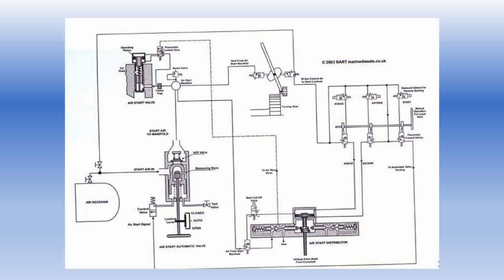The image you see in front of you is the starting air system of the Sulzer RTA engine. As you can see, it basically consists of an air bottle, the starting air valve, the main starting air valve, the air distributor, the turning gear interlocks, the valve assembly, solenoid valves as well as pneumatic valves.